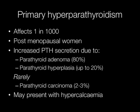Approximately one in a thousand people are affected by primary hyperparathyroidism. Patients are typically postmenopausal women. The increased PTH secretion in primary hyperparathyroidism is due to a parathyroid adenoma in approximately 80% of cases, and less frequently parathyroid hyperplasia in up to approximately 20% of cases. Rarely, parathyroid carcinoma may cause increased PTH secretion. Primary hyperparathyroidism may present with hypercalcaemia.